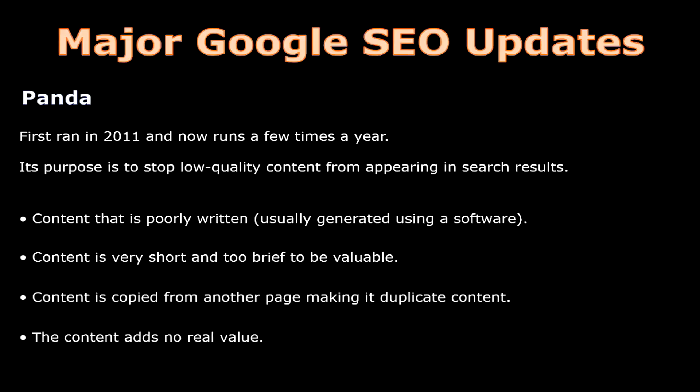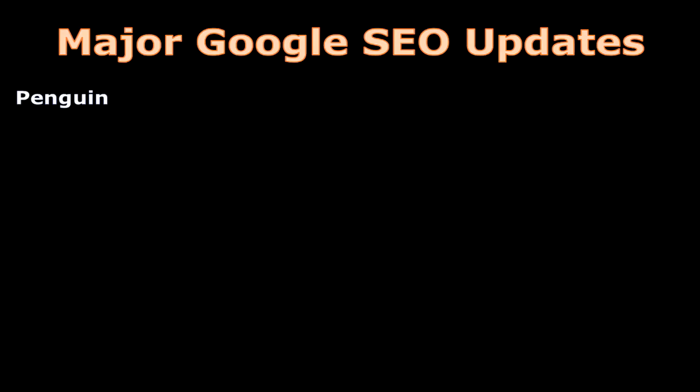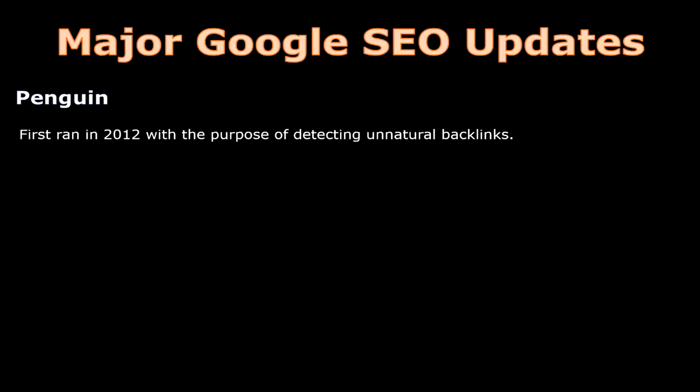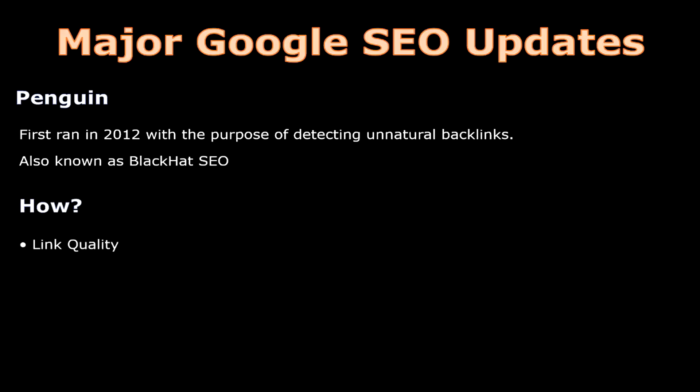Low-quality content can also be content that is copied from another page, making it duplicate content, or content that adds no real value. The next major update was Penguin. Penguin first ran in 2012 with the purpose of detecting unnatural backlinks, also known as black hat SEO.